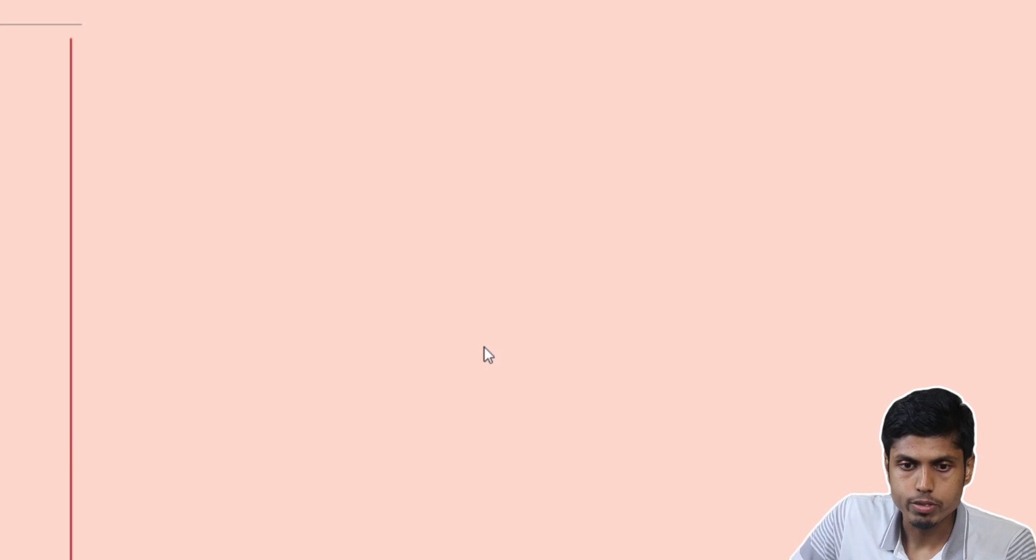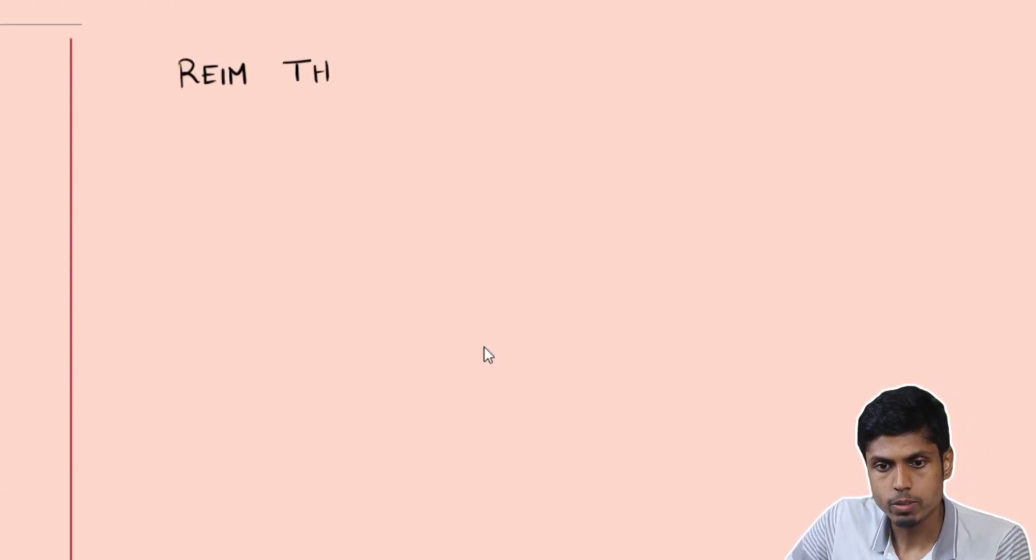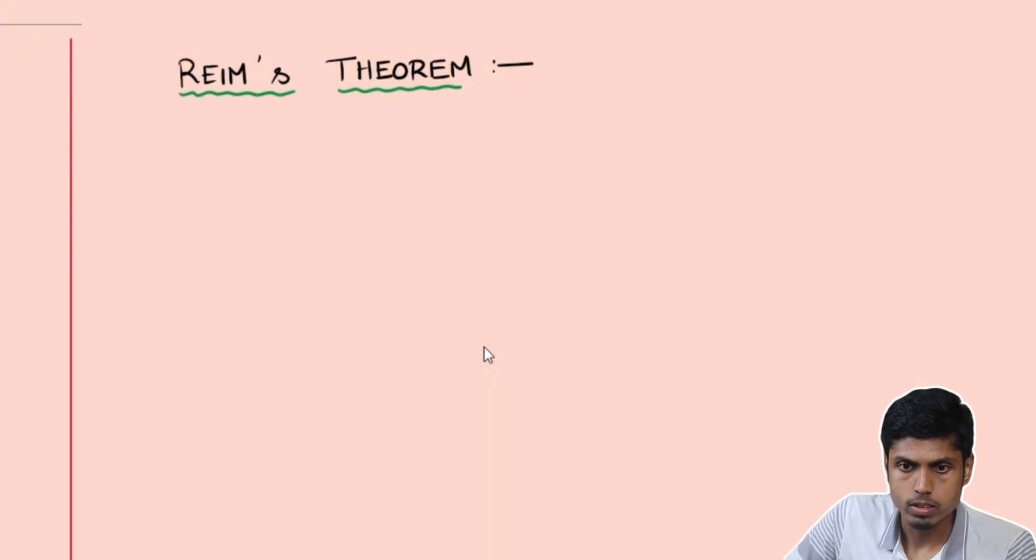So let's get started. We are first going to learn the very trivial form, Reim's theorem in a very trivial form. This is called form 1 of it.